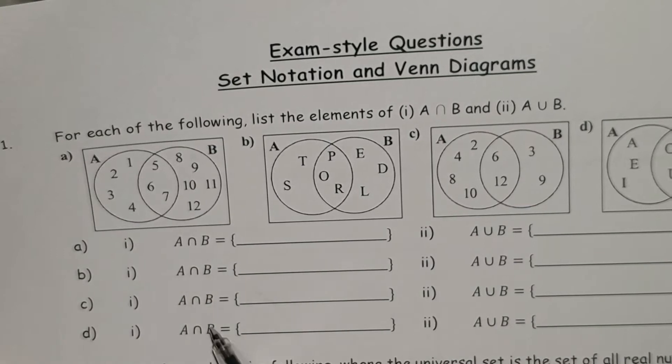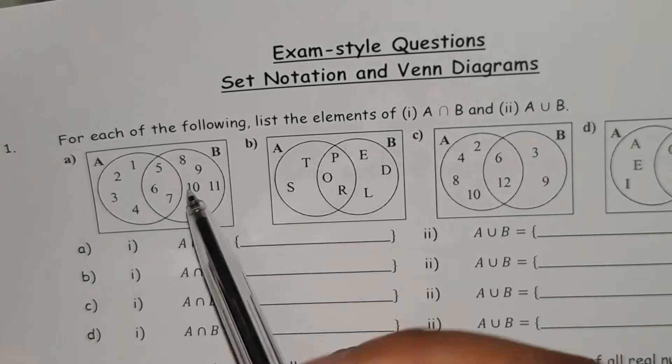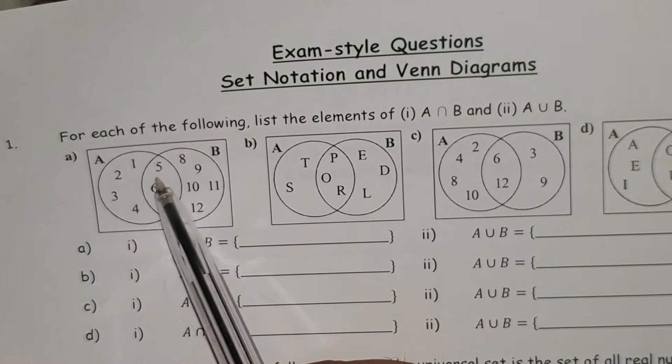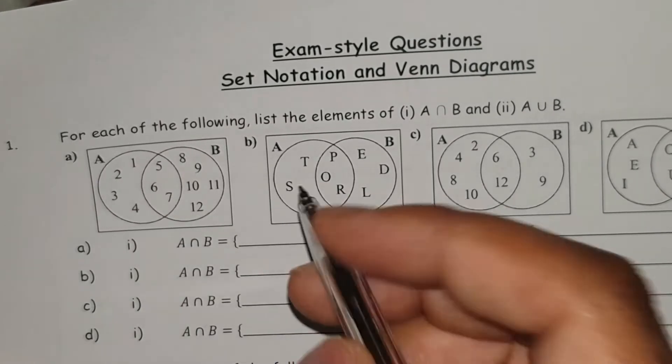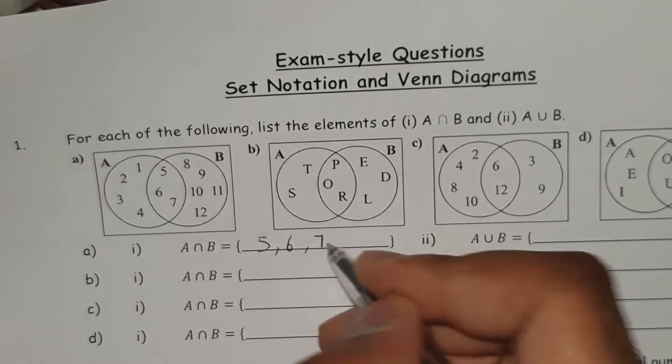The first question focusing on this column here, you have got the AND rule. So this means that it's the numbers which are belonging to both set A and set B, so everything in between. That's going to be 5, 6, 7.